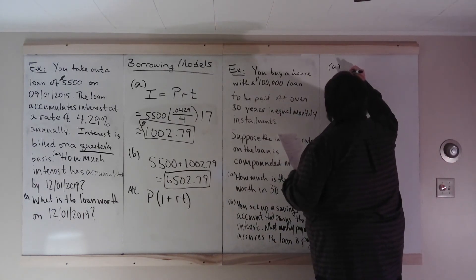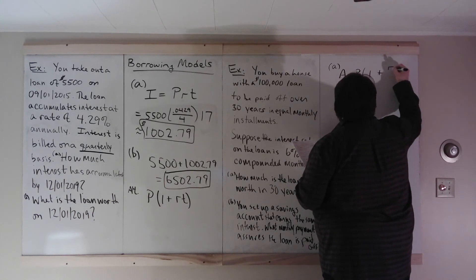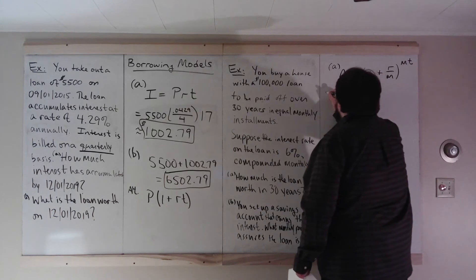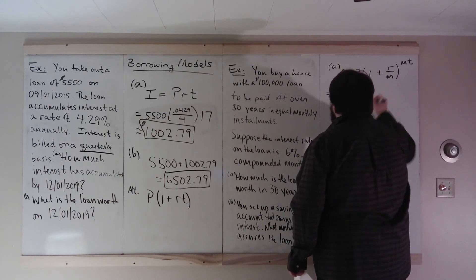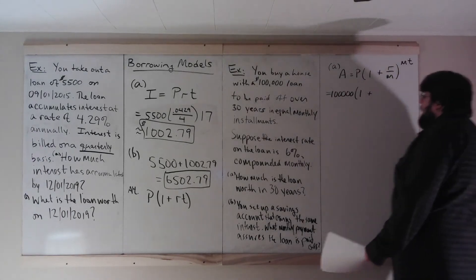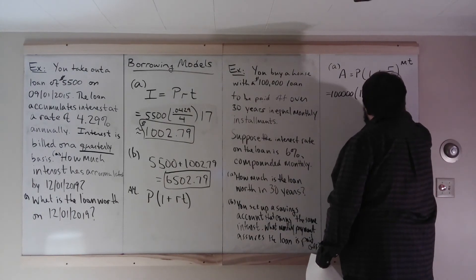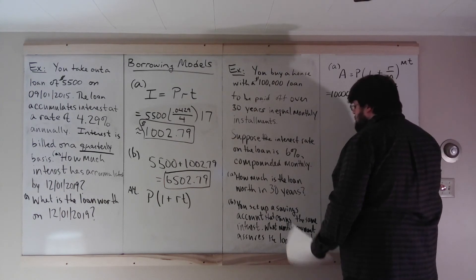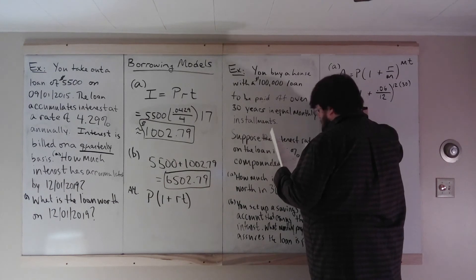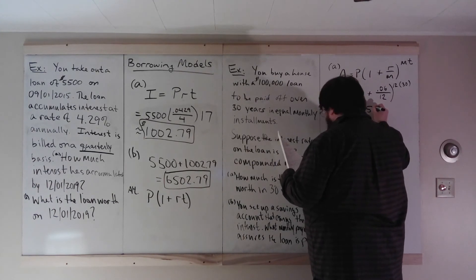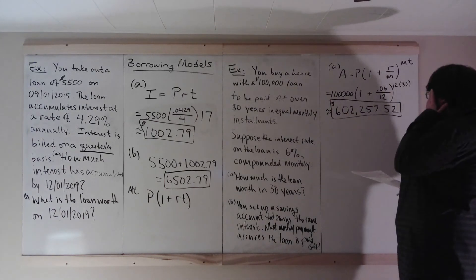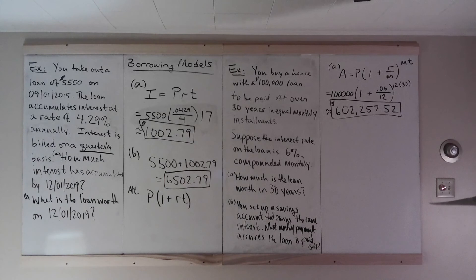So we're going to need the compound interest formula, which is A equals P times 1 plus R over M to the MT. Those are the letters we used. So here, it would just be 100,000 times 1 plus the rate. What's the rate here? Remember, since we have R and M, we're going to keep everything annual. 6% annually, compounded monthly, so M is 12, raised to the 12 times time. We want 30, because we want years, 30 years. So this is approximately equal to $602,257.52 cents. A lot of interest there. I mean, 6% compounded monthly over 30 years. That does build up.